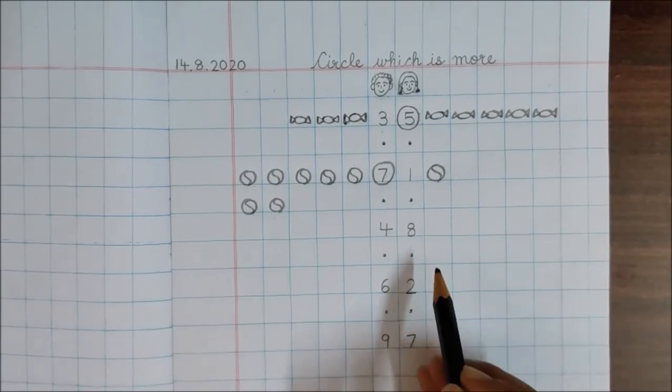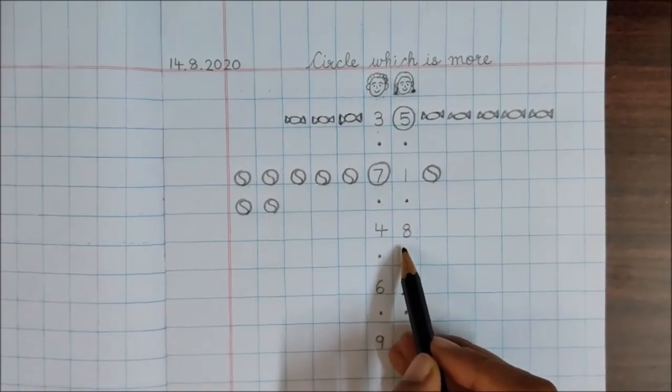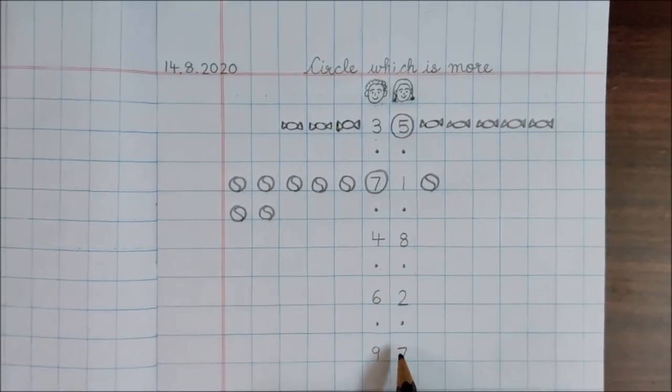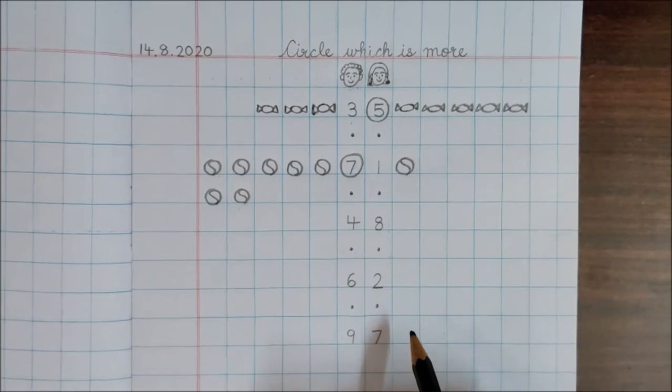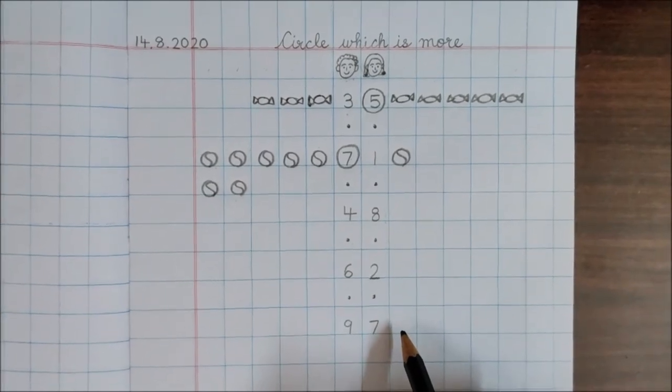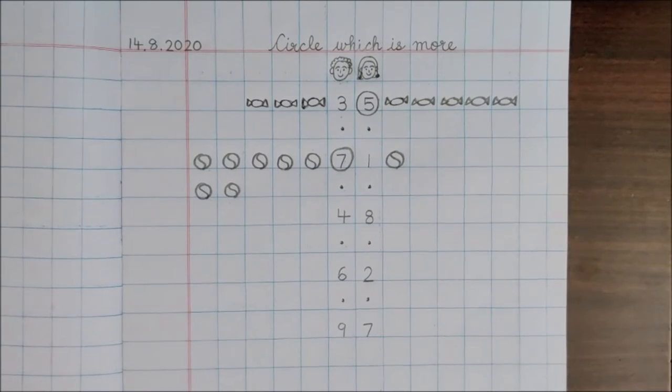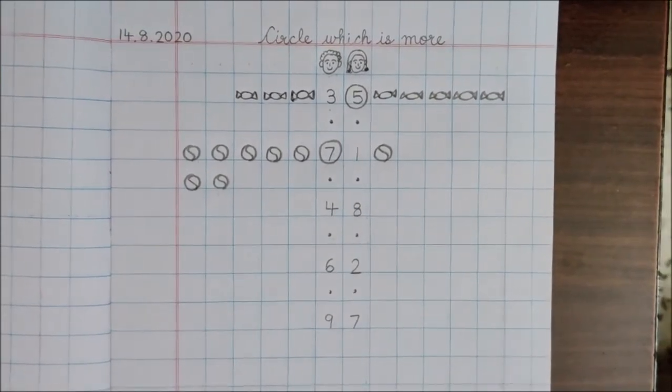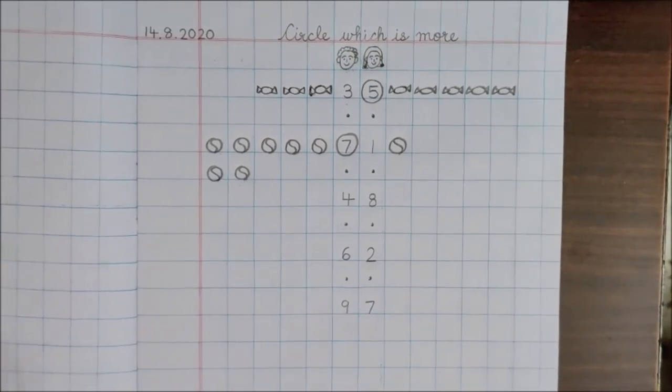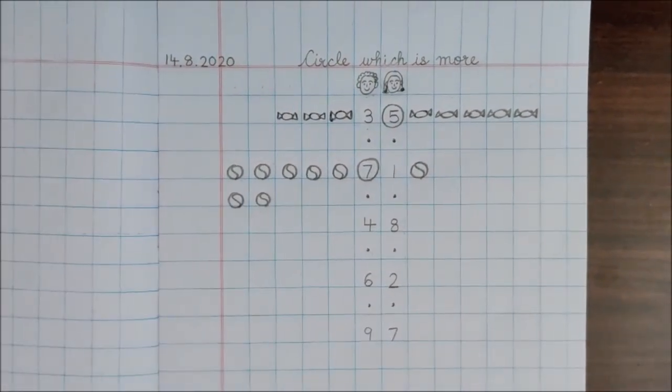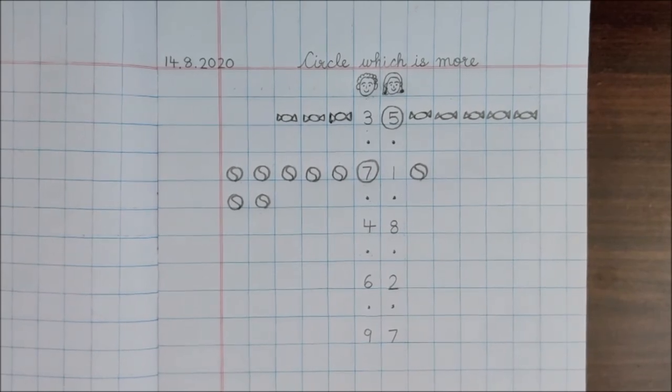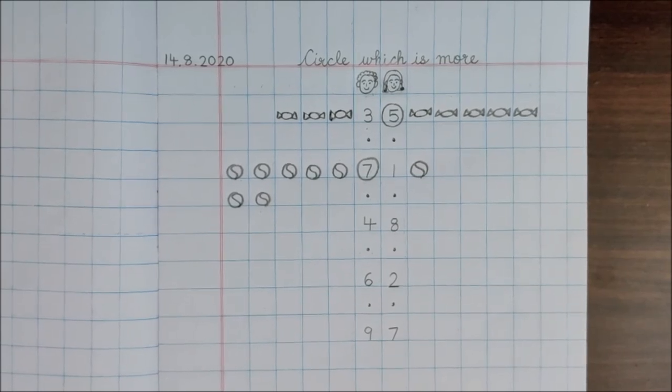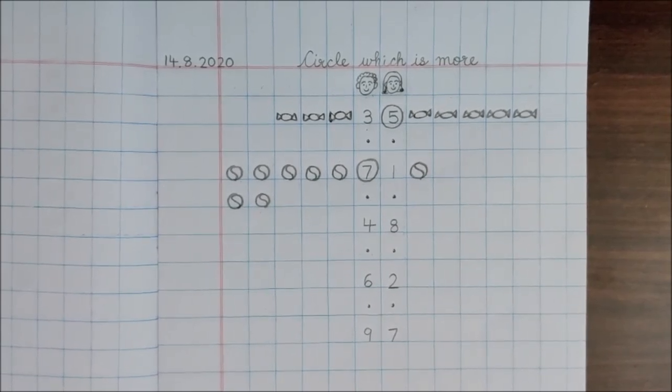Like this children. For these numbers, you will draw different things which papa and mama got for you. And after drawing and circling the number which is more, you can color the pictures. And after completing your work, you are supposed to share photo of this work with your teacher. We will be waiting. Bye children. And a very happy Independence Day to all of you. Take care. Bye bye.